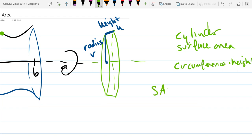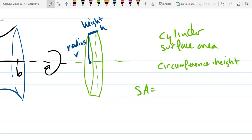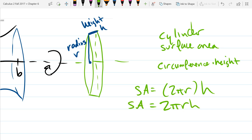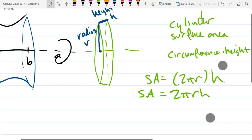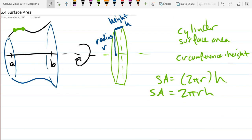So, our surface area, we're ready to write that down. So, let's go with SA for surface area. So, circumference, 2πr, height h. So, we've got 2πrh. So, any questions on coming up with that? The only tricky thing is h is the arc length.